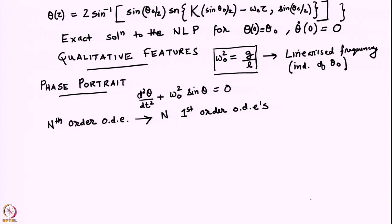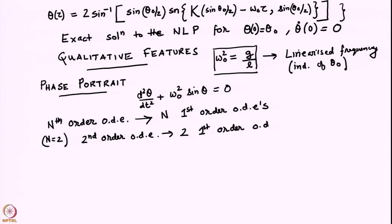In our case, we have a second order ODE, so n is equal to 2 for us. We will convert a second order ODE to 2 first order ODEs. These ODEs will typically be non-linear and will also be coupled to each other.